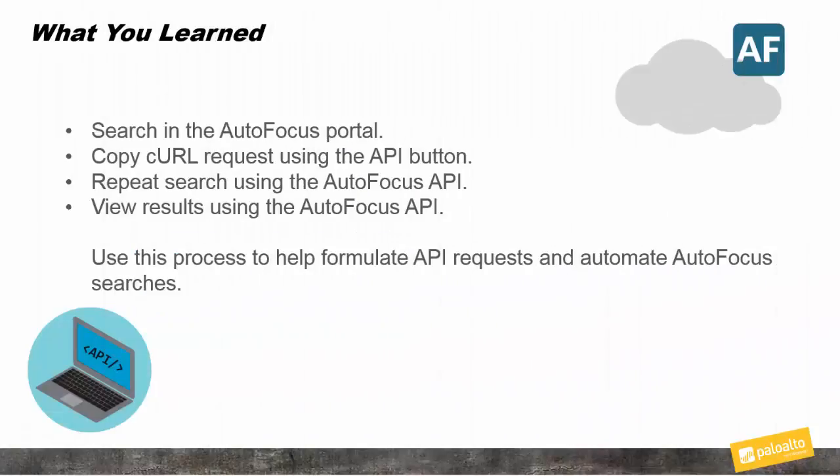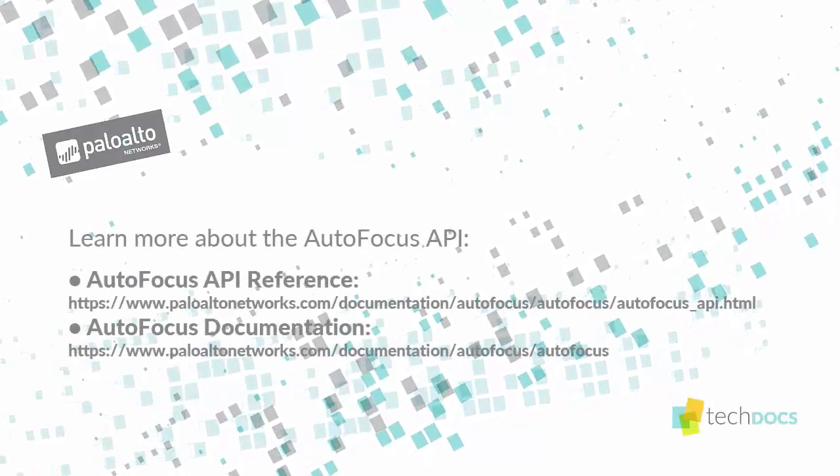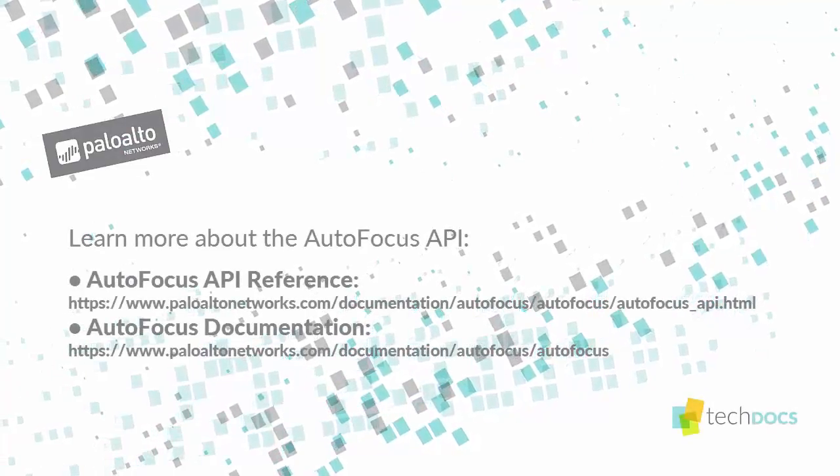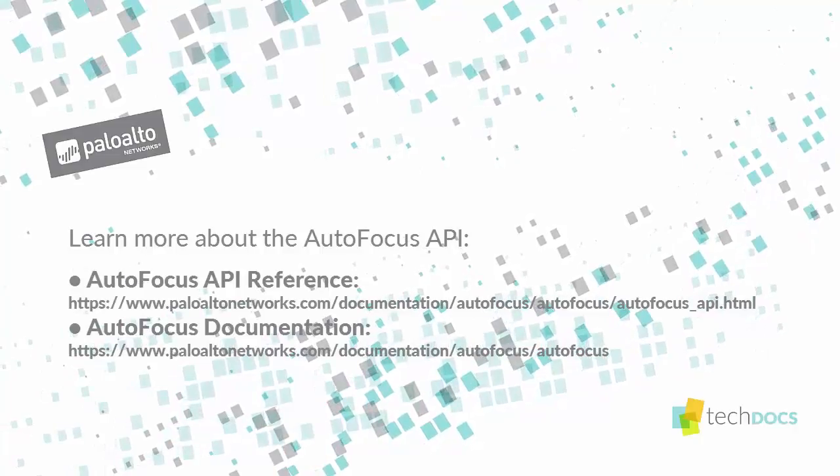In this tutorial, you learned how to use the Autofocus portal to construct a search for malware. You then used the provided curl request to repeat that search and view results through the Autofocus API. You can use this same process to test other searches on the Autofocus portal, then view the same results outside of the Autofocus portal using the Autofocus API. To learn more about the Autofocus API, refer to the Autofocus API reference. You can also read other Autofocus documentation on the Palo Alto Networks documentation portal.